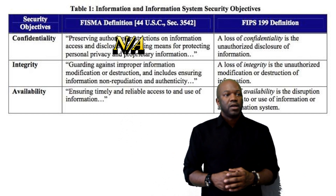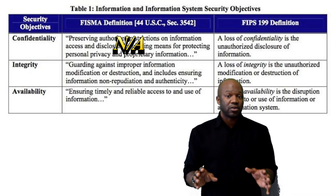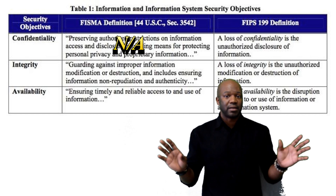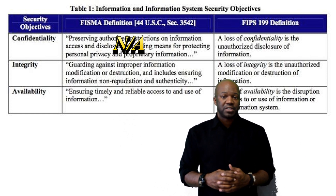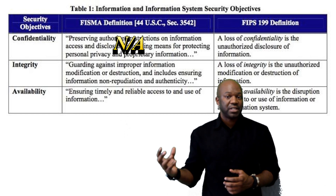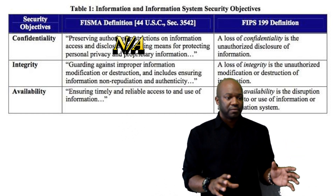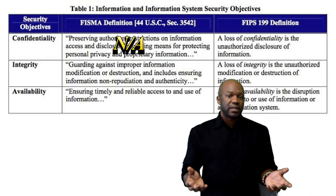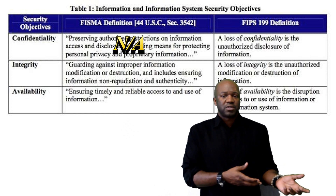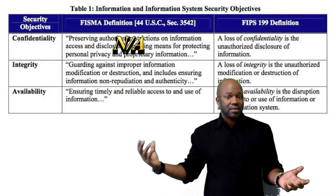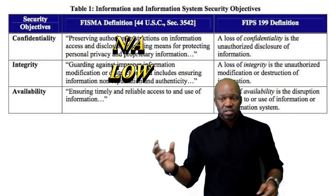Now let's look at integrity. Let's say someone fat-fingered some information causing misspellings, or the data got corrupt and it's just random letters and numbers. That affects the integrity of our system. Would that impact our organization? Yes, it does affect us if customers can't read the publicly available information. But since it's just a web server and we have a backup system, the impact to our organization is actually low. If the data is corrupt, we'll just stand up our next system.